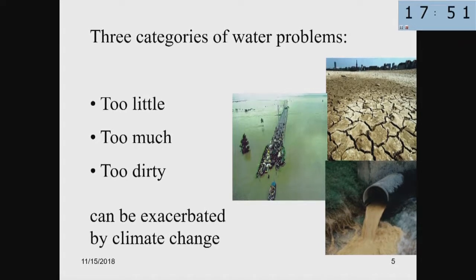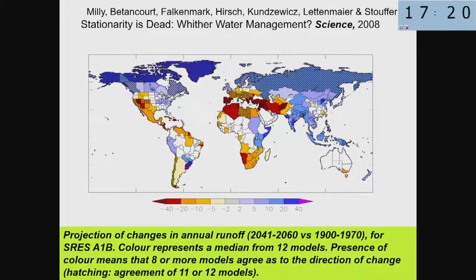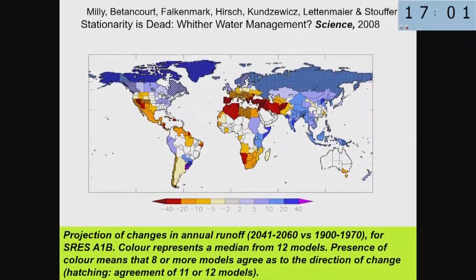Floods and intense precipitation transport nasty substances, so water quality problems are related to floods as well. I refer to an old paper where I was co-author, published ten years ago and raising many citations. Changes in annual runoff are likely to look as on this map. In plain words, dry areas may become drier and wet areas wetter — not good news for the Mediterranean belt. More water is projected for Siberia, Canada, and the north.